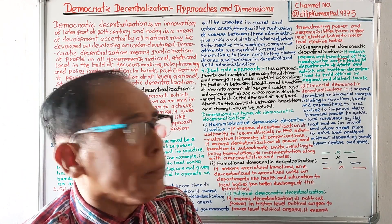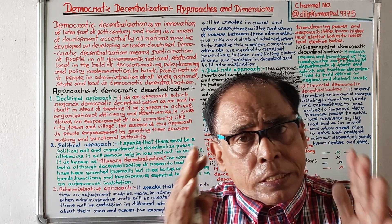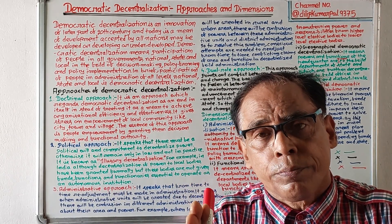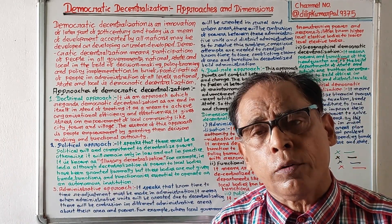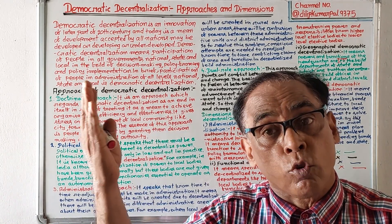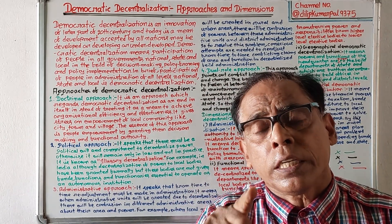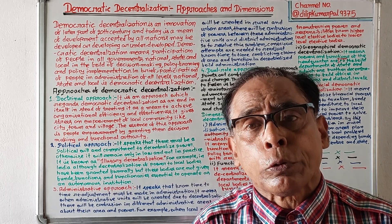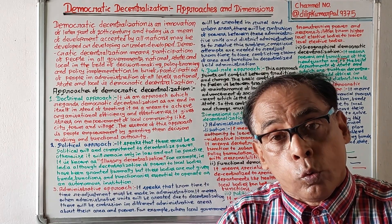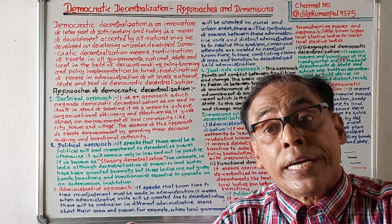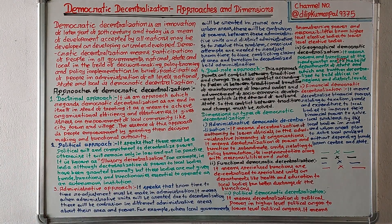Okay viewers, we have discussed today democratic decentralization approaches and dimensions. This is part two of the video. In part one we discussed the meaning and evolution of democratic decentralization. I have full confidence that plus three second semester general elective students will be benefited by this video. I request them to inform their friends of this paper so that some students will benefit. Thank you, have a good day.